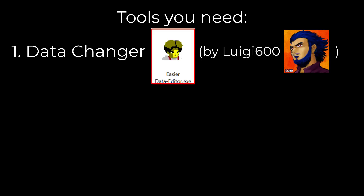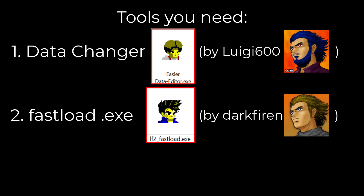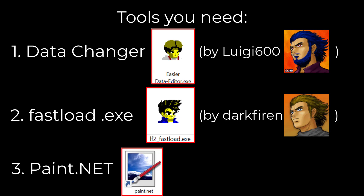Now I'll show you some tools that you need. All download links will be in the description. First, the Data Changer — a program that allows you to read and modify data files. There are many out there, but I highly recommend Luiki's Easier Data Editor. Second, Dockfiren's FastloadX file — since you open and close the game regularly, this will save you a lot of time. Third, Paint.net for sprite editing. Again, we will mainly focus on data changing in this series.